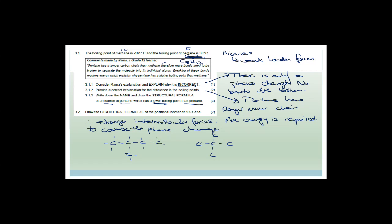Draw the structural formula of the positional isomer of but-1-ene. All that means is we're doing exactly the same thing as but-1-ene, except we're changing where the double bond is. So it'll be C-C=C-C — that's but-2-ene, the only positional isomer. I've been lazy and haven't put my hydrogens in for any of these drawings, but you guys have to — that's teacher's prerogative, but you have to.